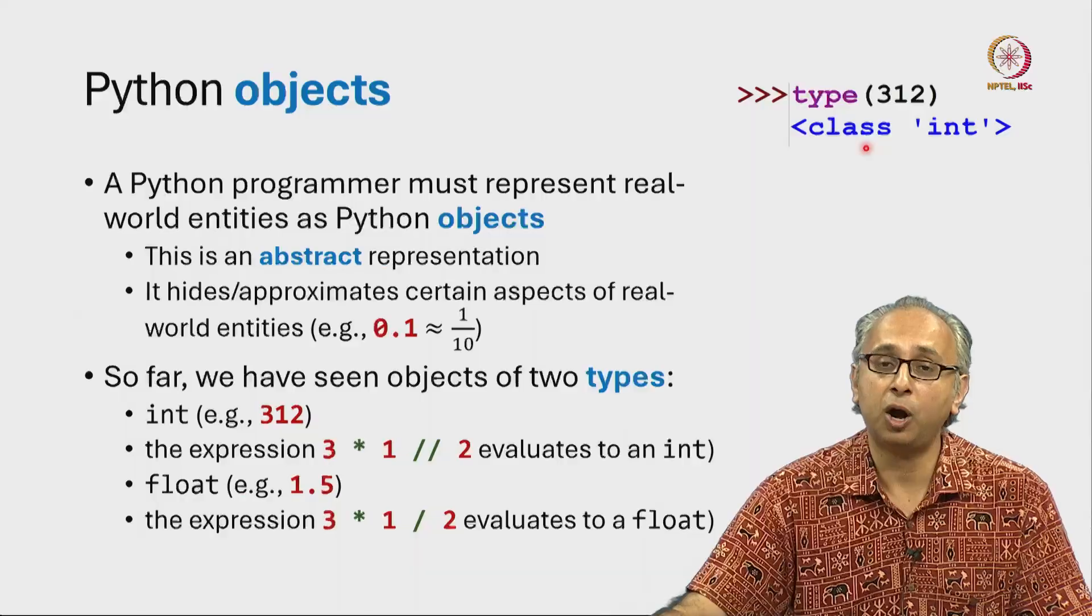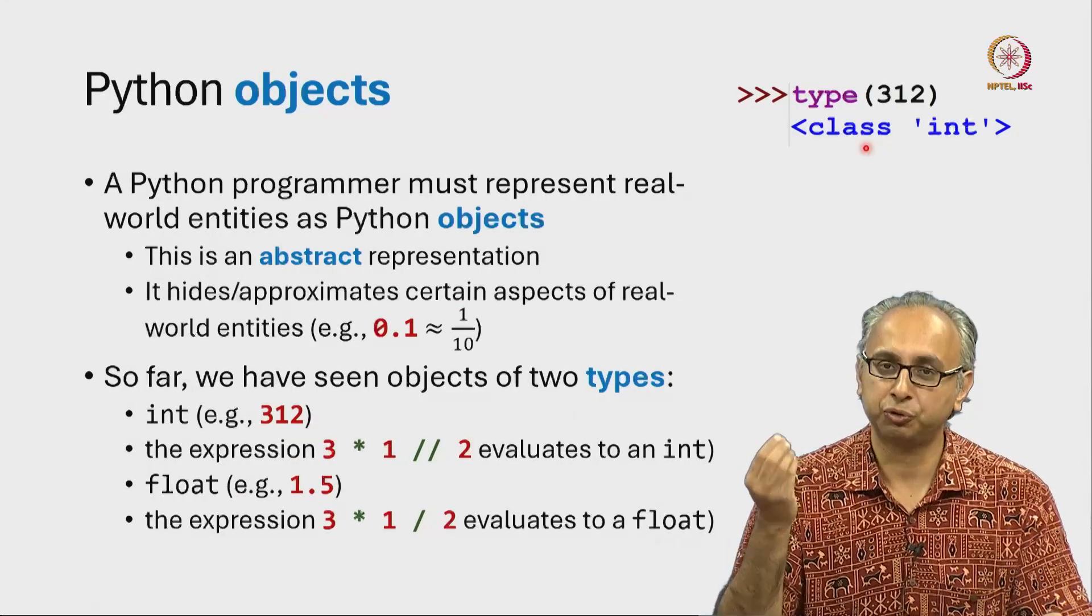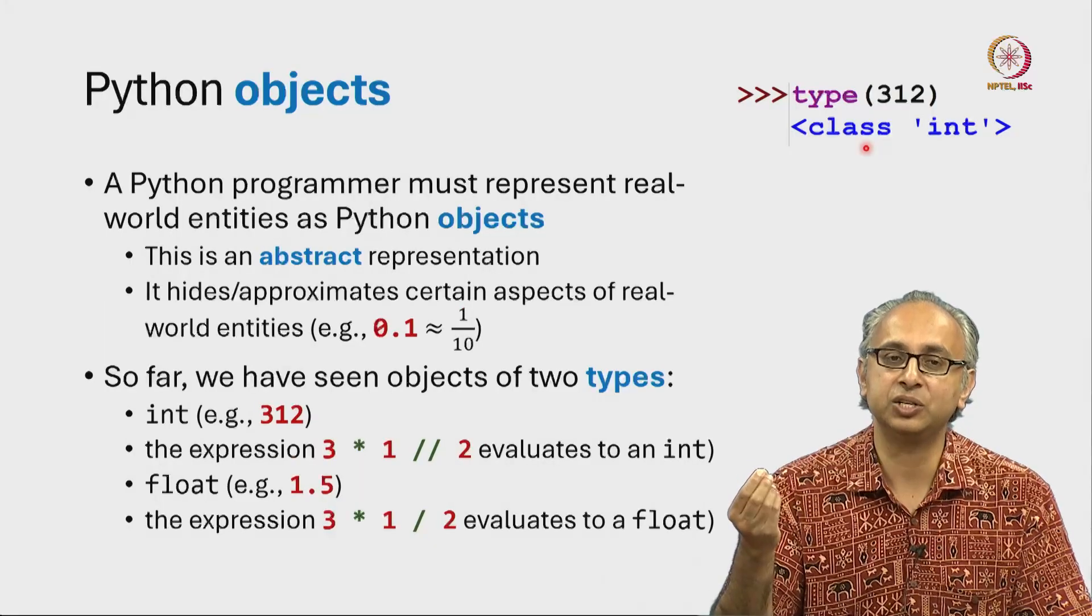And it will say that object belongs to the class of objects int. So 312 is an int object.